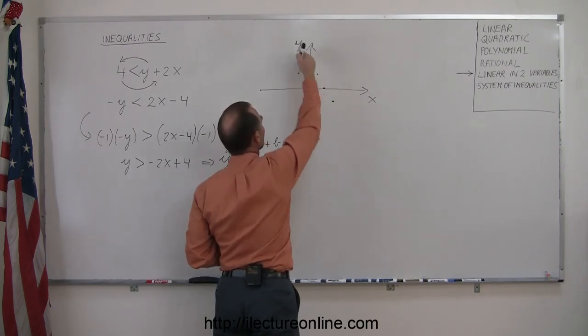Now to figure out which of the two regions, to the left or the right of that boundary, satisfies the inequality, we're going to try a test point. We take any point, but 0, 0 is always a good point to choose.